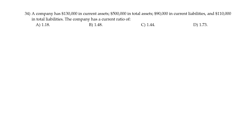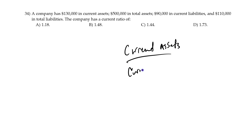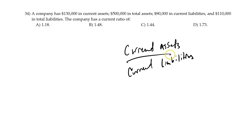The formula is current assets divided by current liabilities. The hope is that this would be greater than one — meaning we have more assets than liabilities.